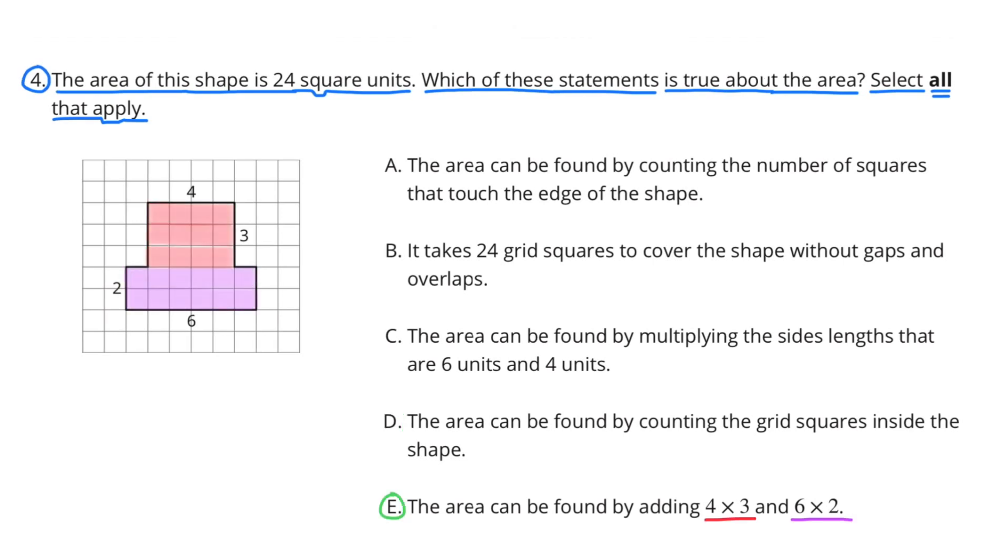E applies because the area can be found by adding 4 times 3 and 6 times 2. It's kind of like what I was talking about in example C. Multiplying the base times the height of quadrilaterals. I've identified two quadrilaterals within this shape. One with dimensions of 4 times 3 and the second one with dimensions of 2 times 6. 4 times 3 is 12 and 2 times 6 is 12. 12 plus 12 is 24 units.